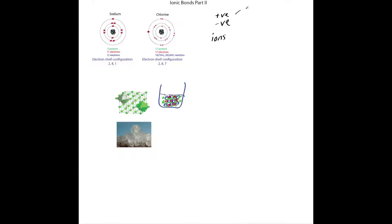You can have cations or anions. Positive charges are called cations, and negative ones are called anions. I'll put these words up on the website so you can read them better. These are called ionic species, and they form ionic bonds. Ionic bonds generally result in a large lattice with alternating positive and negative charges.